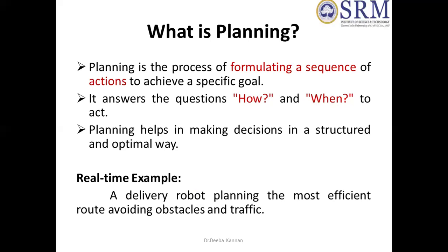For example, if you plan an event or college schedule, you have to go through every process. You have to sequence every process to reach the destination. There are priorities for each action — priorities and timing. Where do we perform each action, and how do we perform it?